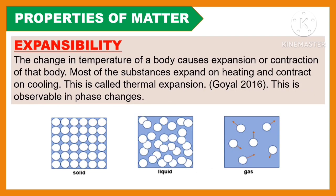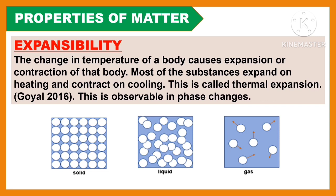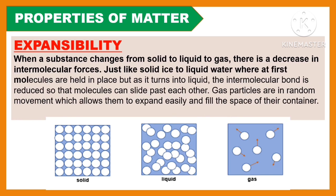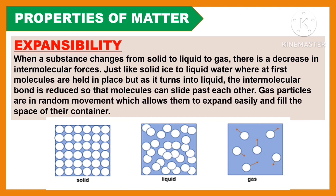Another property of matter is expansibility. The change in temperature of a body causes expansion or contraction of that body. Most substances expand on heating and contract on cooling — this is called thermal expansion, which is observable in phase changes. When a substance changes from solid to liquid to gas, there is a decrease in intermolecular forces, like solid ice to liquid water where molecules are held in place, but as it turns into liquid, the intermolecular bond is reduced so molecules can slide past each other. Gas particles are in random movement, allowing them to expand easily and fill the space of their container.